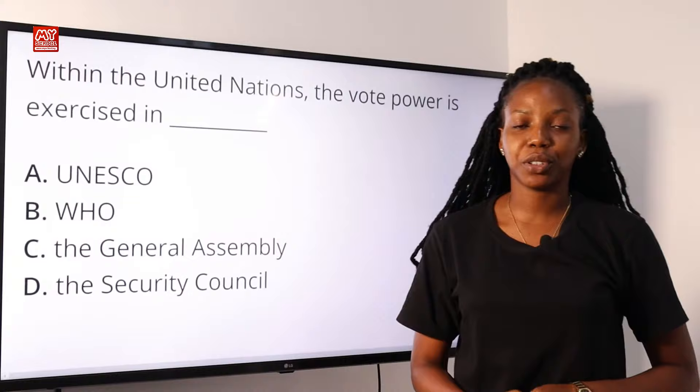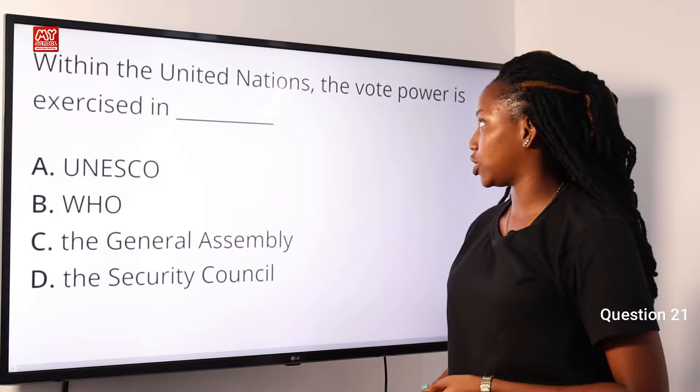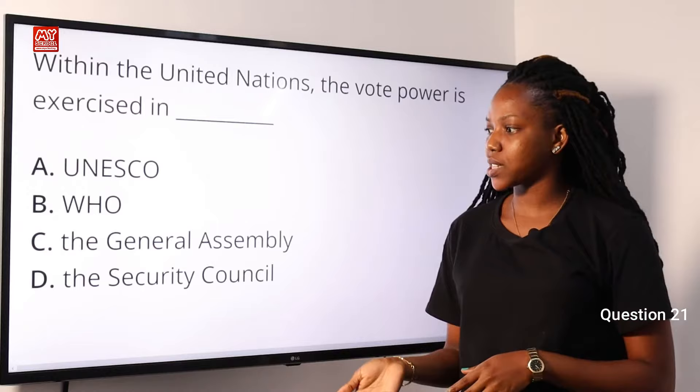Now let's begin with question 21. Within the United Nations, the veto power is exercised in dash. A, UNESCO. B, WHO. C, the General Assembly. D, the Security Council.